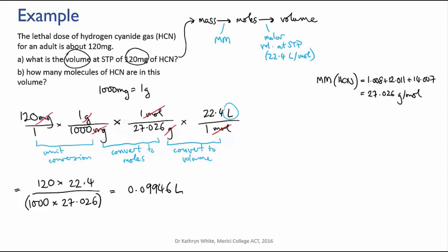I go back to check my sig figs. The original mass that I was given has only two sig figs, so I need to round this off. It becomes 0.099 liters, which is about 100 mils of gas, which really isn't very much.